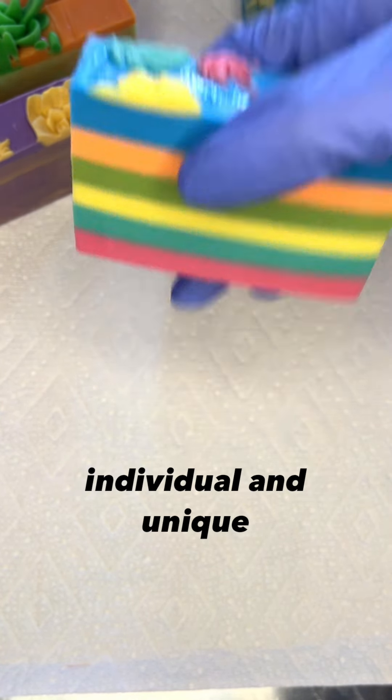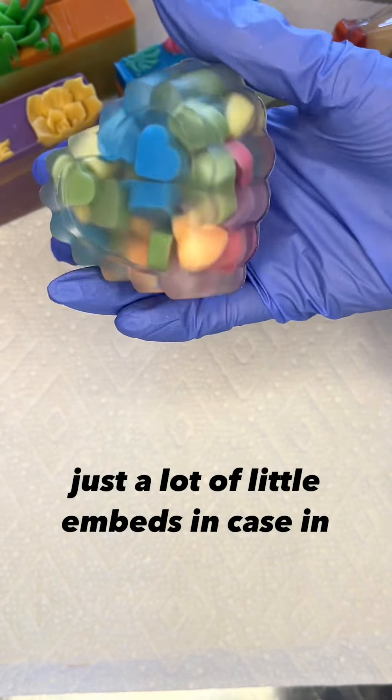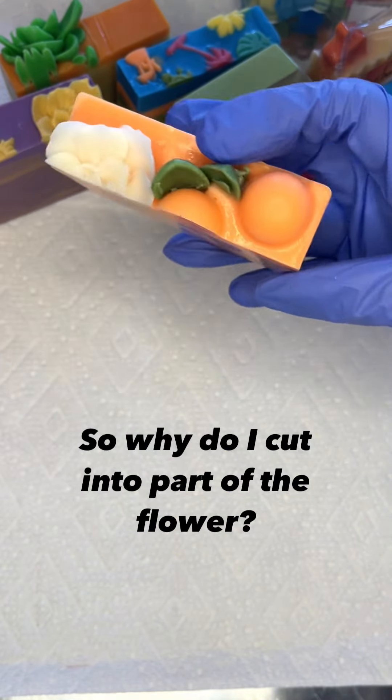And then I have soaps like this where it's just a lot of little embeds encased in some clear soap. So why do I cut into part of the flower?